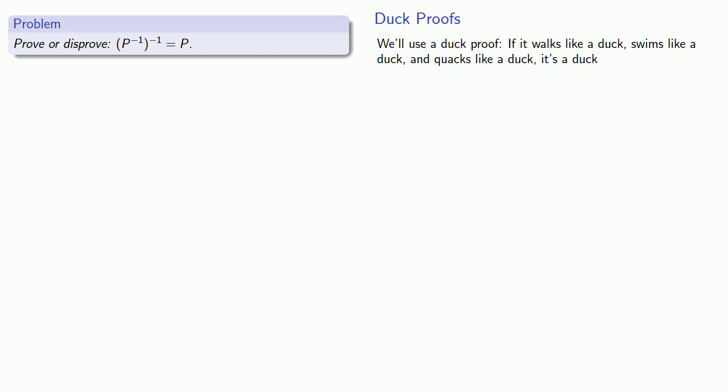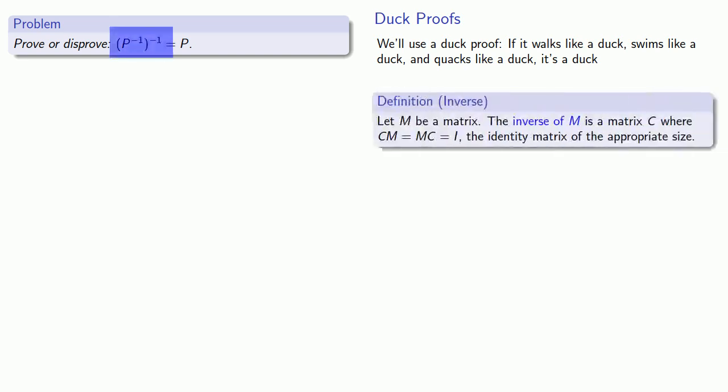So let's ask ourselves: what is the property of the inverse? If I ignore what's inside the parentheses, then what I have is the inverse of something. My definition of the inverse says that if I multiply this inverse of something by whatever it was the inverse of, I should get the identity matrix. So putting back our insides, the inverse of P inverse, multiplied by P inverse, should give the identity matrix.